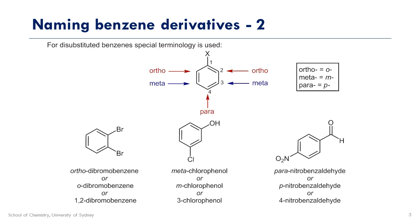Now let's look at the case of doubly substituted benzene. First you find your reference carbon — the one with the highest priority functional group attached, denoted here with X. There's a link in the description which goes through these priorities in detail. Groups of the highest priority include carboxylic acids, aldehydes, ketones, alcohols and amines. So many of the common names from the previous slide can be used as our starting name without needing to number anything with a 1.